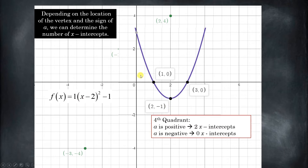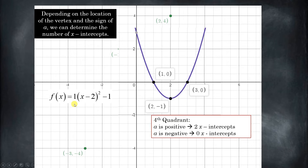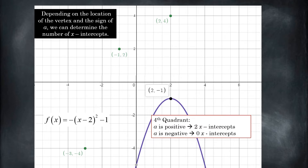For example, this is the graph of x minus 2 squared minus 1. The vertex is in the fourth quadrant, which is below the x-axis. The parabola is going up, so it's going to cross two times — there are going to be two x-intercepts. Whereas if we had negative x minus 2 squared minus 1, here a is negative 1, and in the previous one a was positive 1. If a is positive, the parabola goes up. If a is negative, the parabola goes down. So if your vertex, which is your maximum value when a is negative, is below the x-axis and the parabola goes down — no x-intercepts. Do you see how that works?